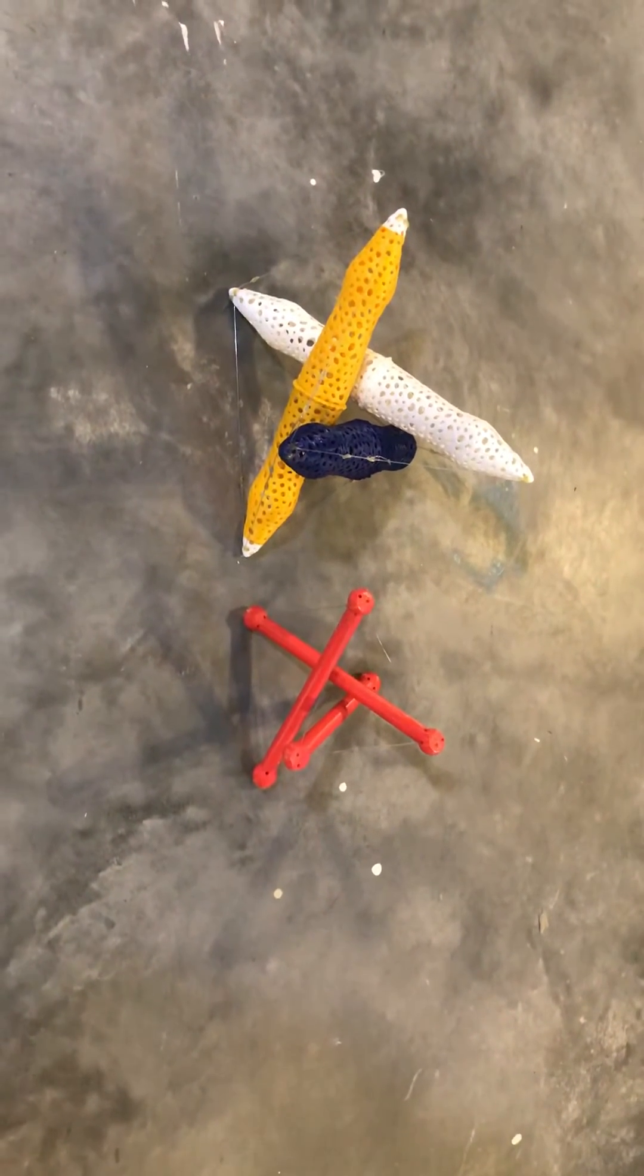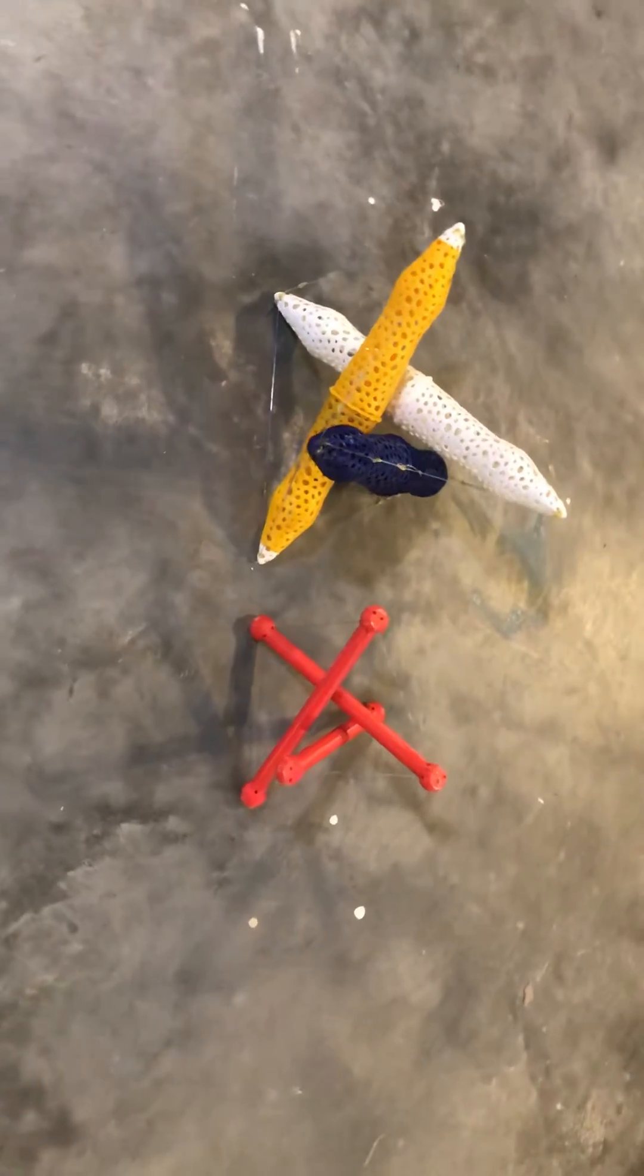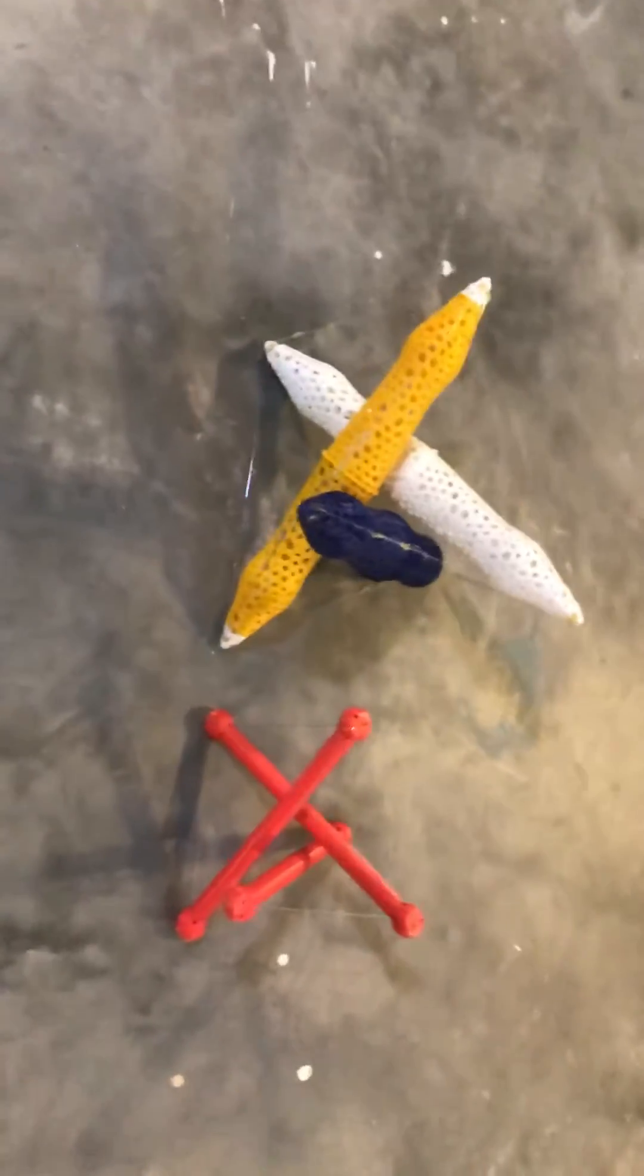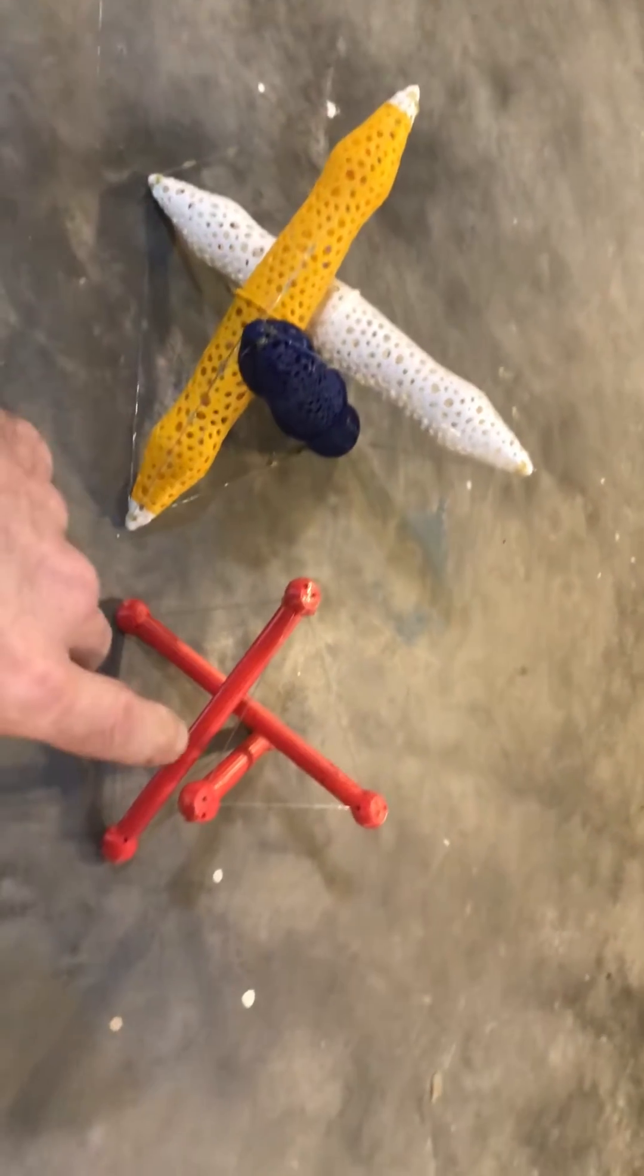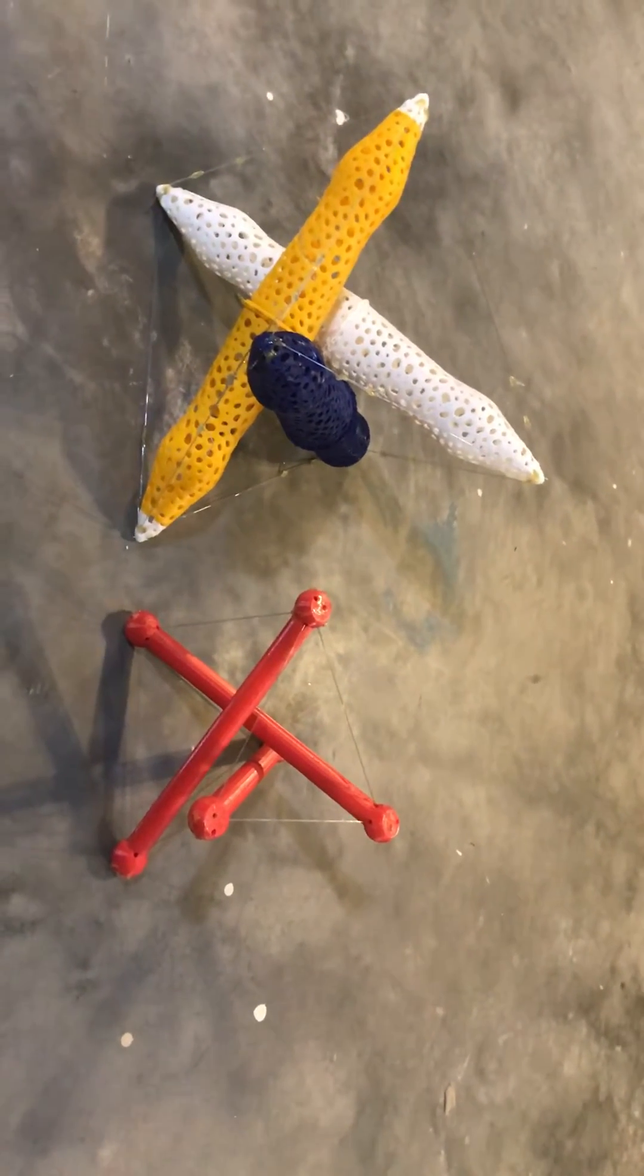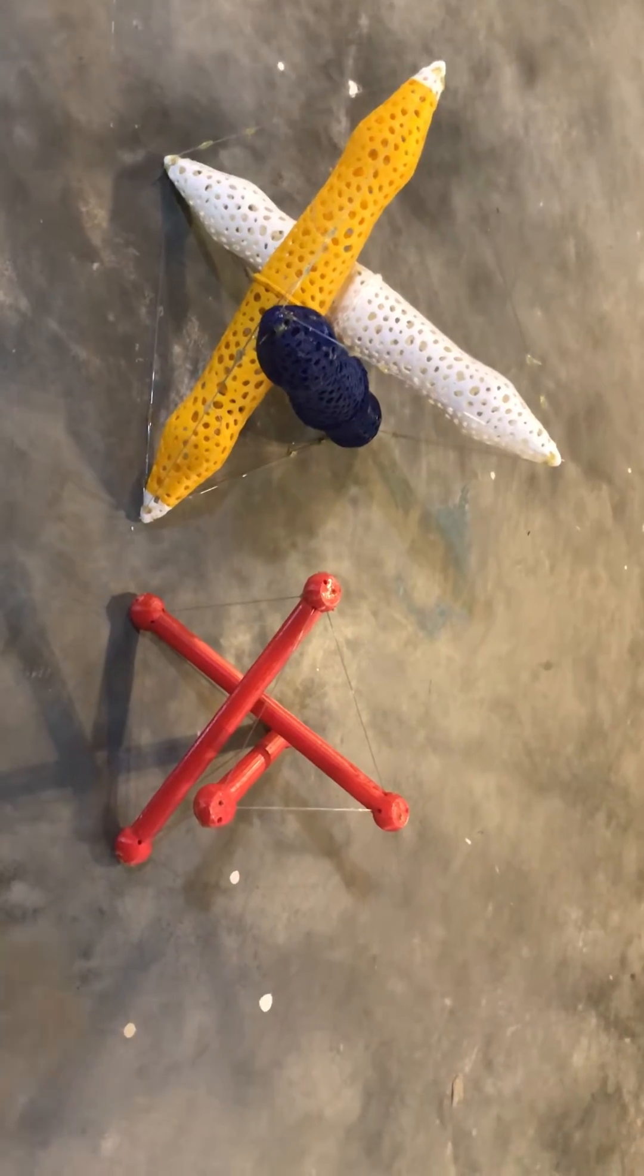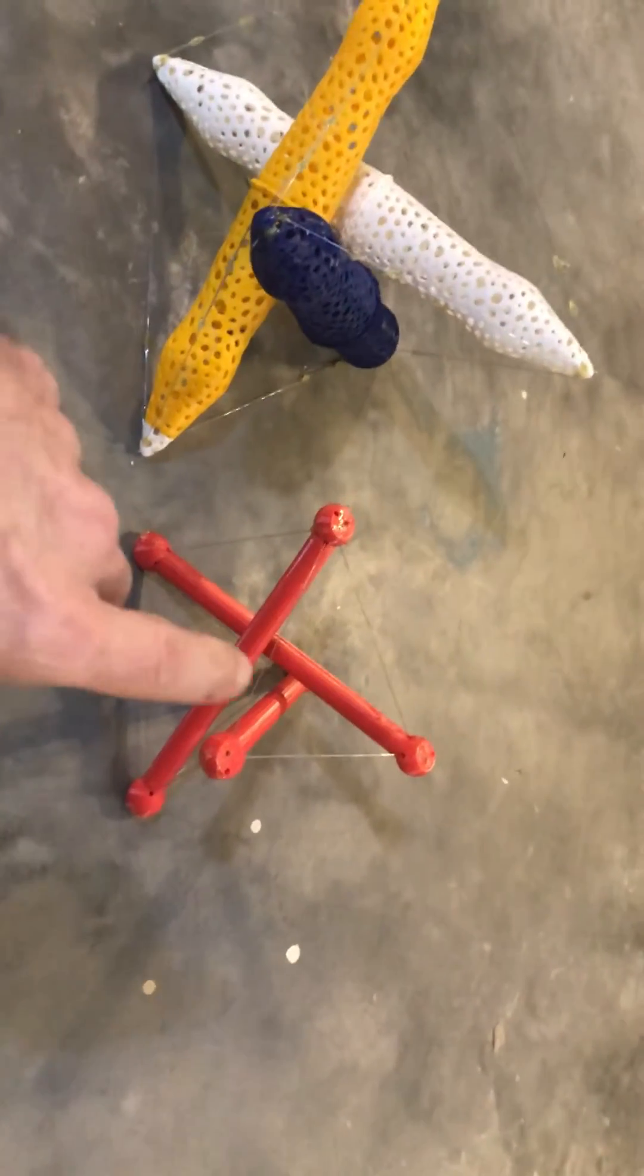I noticed that not many people were downloading the tensegrity model, so I thought I'd make a new one that was easier to assemble and easier to print. This prints in one piece on the print bed with some supports.